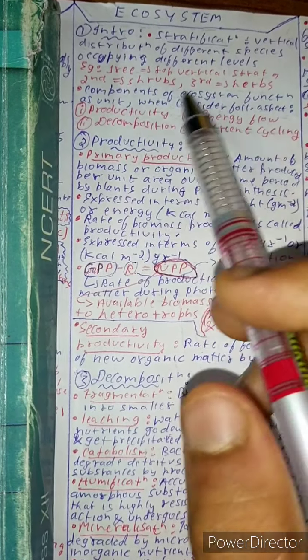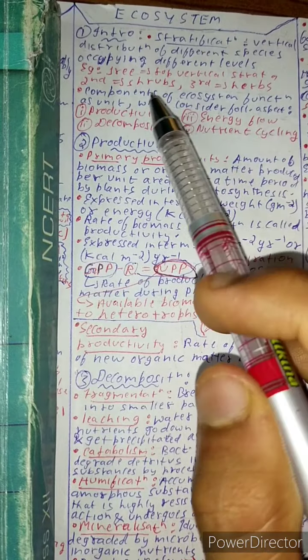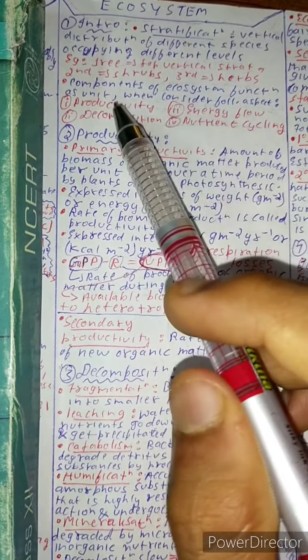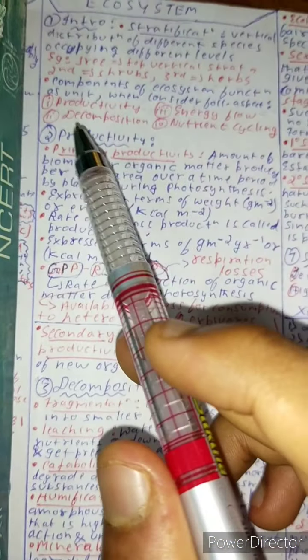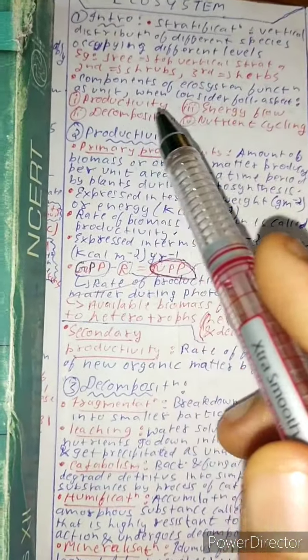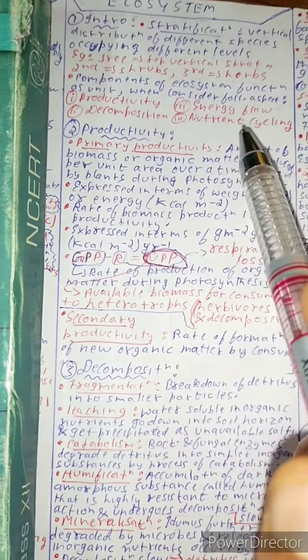The important components of ecosystem which function as unit are the following: first one is productivity, second one is energy flow, third one is decomposition, and fourth one is nutrient cycling.